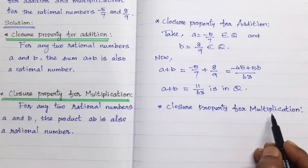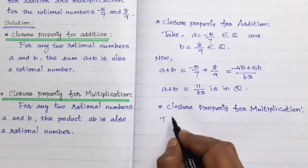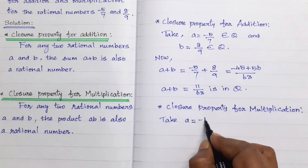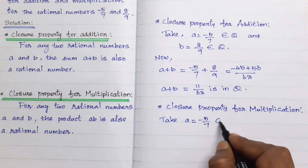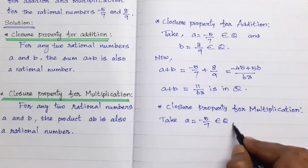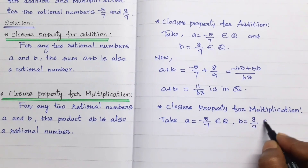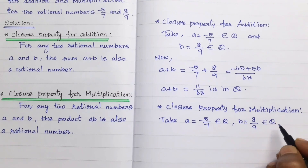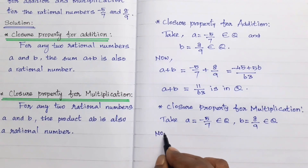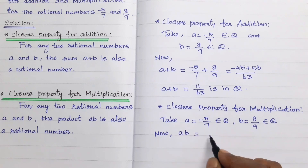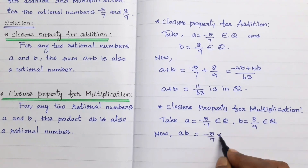Next is the closure property for multiplication. Take a equal to minus 5 by 7, which belongs to Q, and b equal to 8 by 9, which also belongs to Q. Now, what is a times b? A into b equals minus 5 by 7 into 8 by 9.